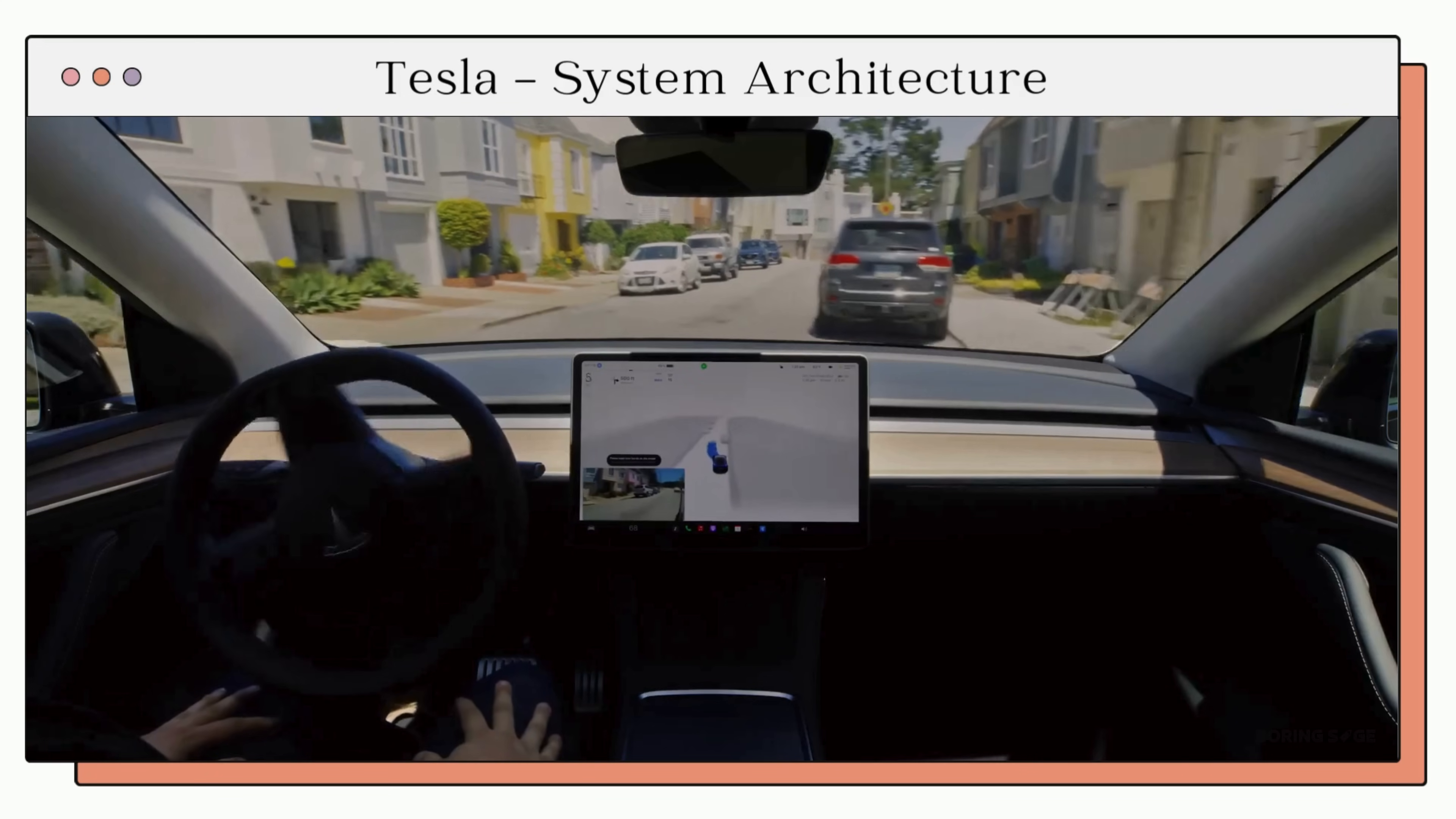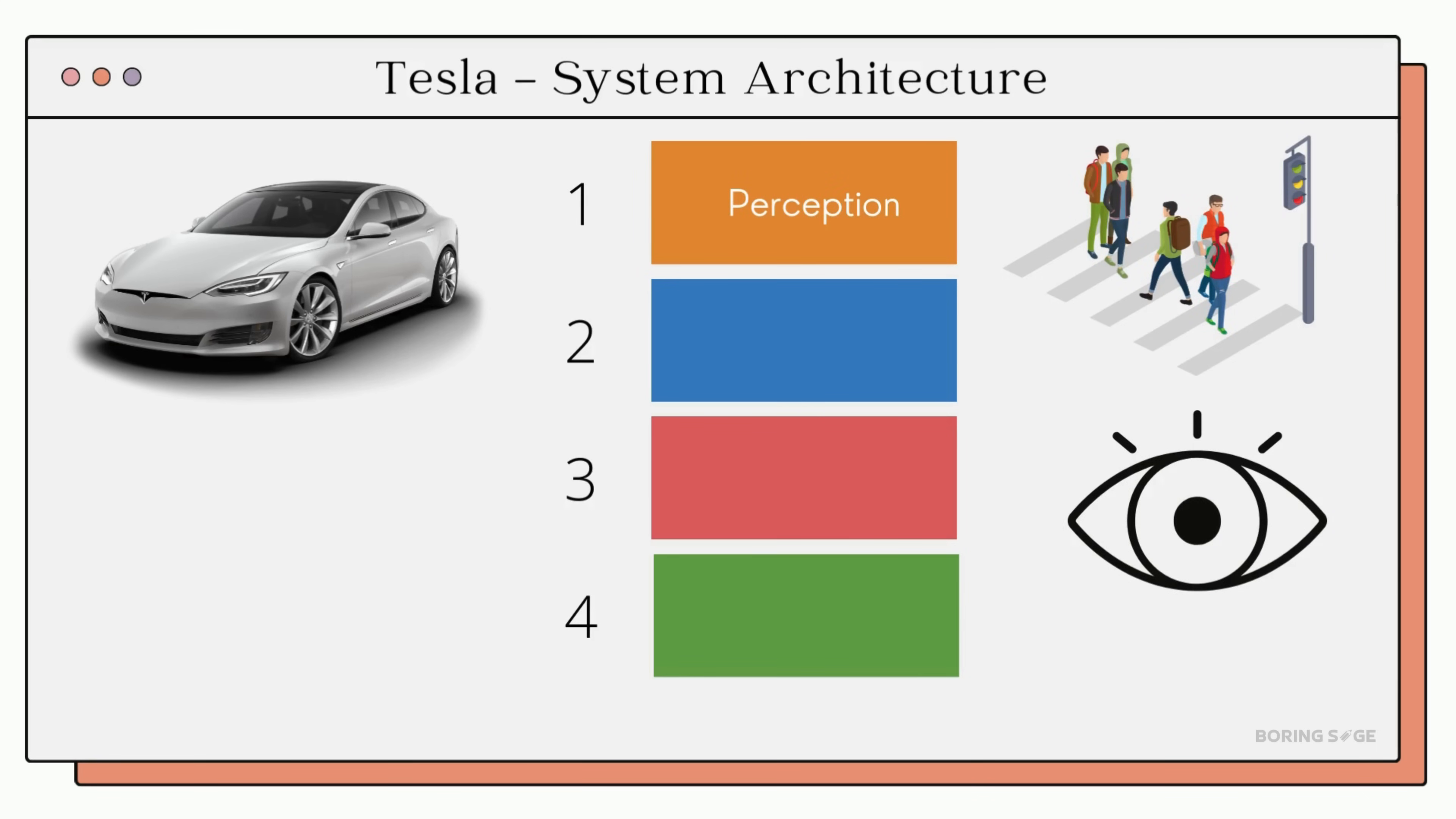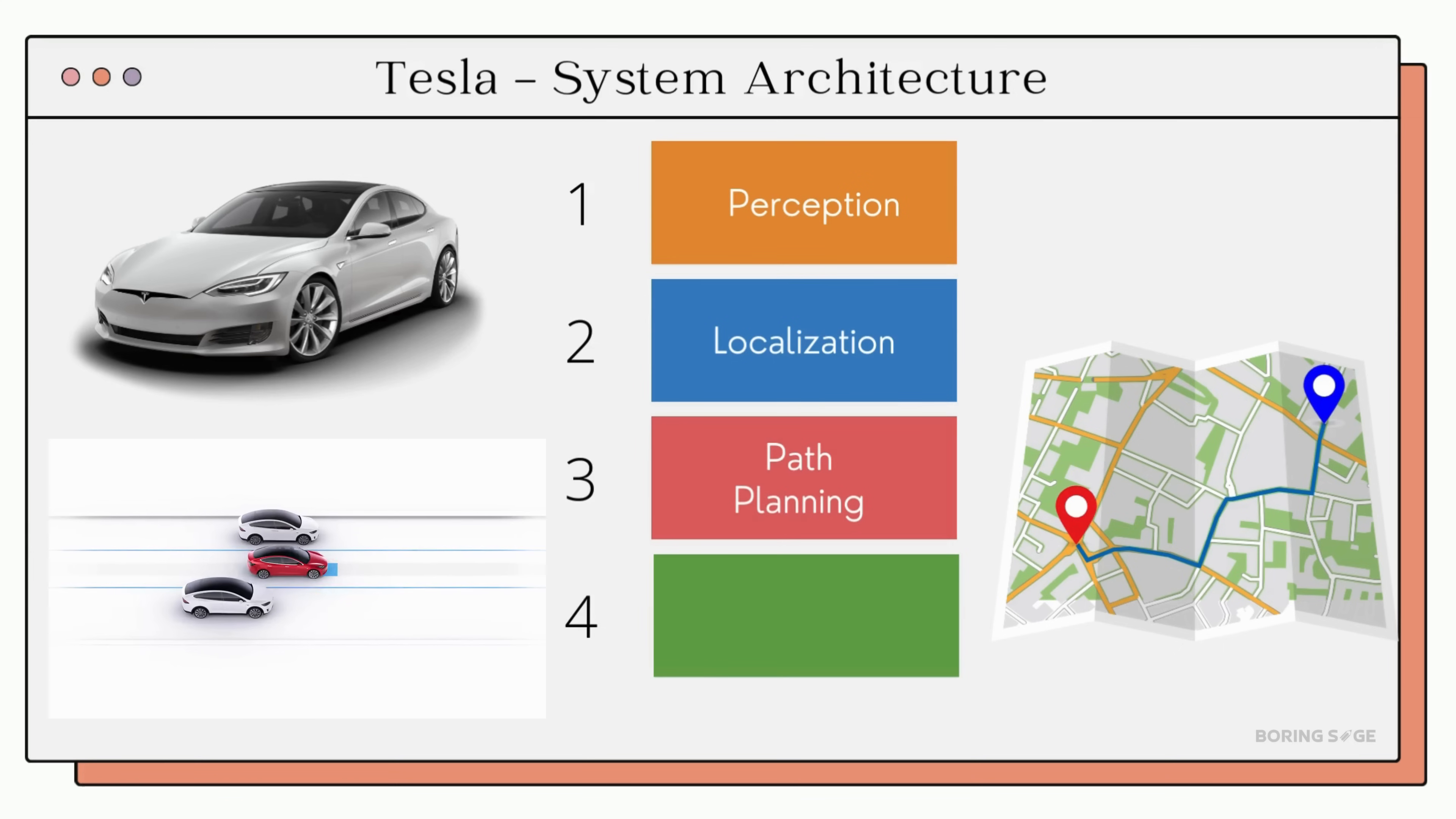Before diving deep into Tesla's FSD system, it's important to understand what a standardized architecture looks like. It actually includes four core components. First one being perception - it's important to understand the world around the vehicle, and that's the job of the perception module. Then we have localization - this module allows us to determine the car's precise location within its environment. This leads us to the third module known as path planning - here we map out the optimal route for the vehicle to follow to reach its destination.